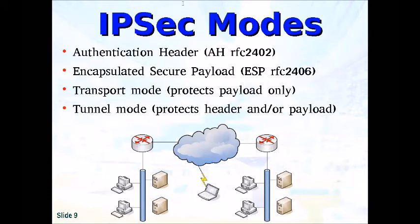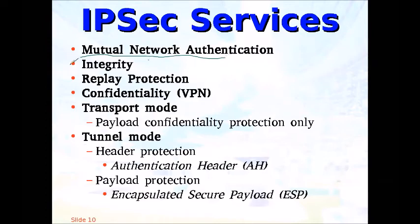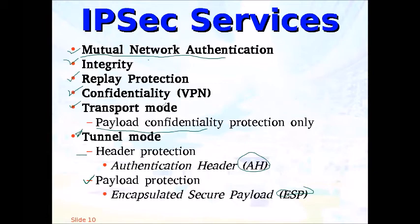Using encryption, we get private communications and we can authenticate. We're also hashing it, so we get mutual network authentication — we know who we're talking to by source and destination IP addresses. We also get integrity and replay protection. Confidentiality — transport mode provides payload confidentiality protection only, but in tunnel mode I can protect the header, authenticate the header, and get payload encryption. Can I do AH with transport? You can, Captain, but if IP addresses change at a NAT point, it won't work. So AH is not really popular in transport. In fact, I've never seen AH mode configured in production — I've never even seen transport mode configured in production.